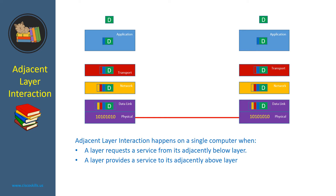After reviewing the data flow in the TCP/IP model, we see that there are two types of layer interactions. The first one is adjacent layer interaction. Adjacent layer interaction happens on a single computer when a layer requests a service from its adjacently below layer, or a layer provides a service to its adjacently above layer.